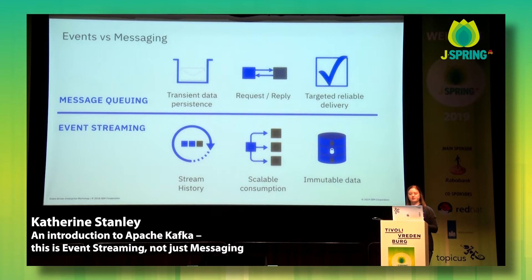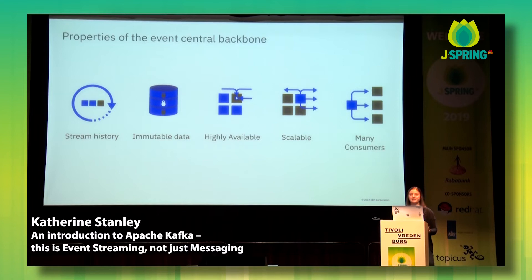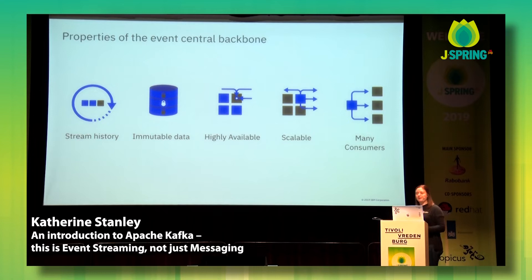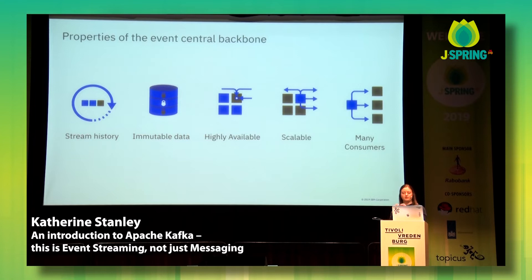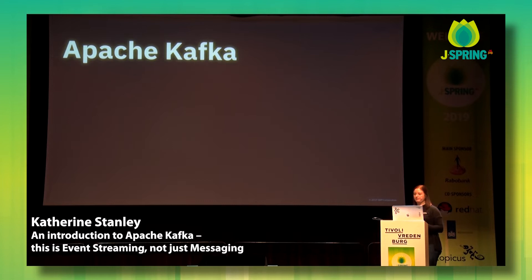For an event backbone built into your system, you want stream history, immutable data, high availability — because if you've got lots of data coming in all the time and you want to access it in real time, you need it to be highly available — scalability for the same reason, and support for many consumers. Companies are shifting to have this event-driven view of the world, focusing on being event-centric with this event backbone. That's where Apache Kafka comes in.